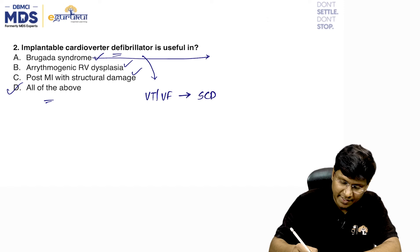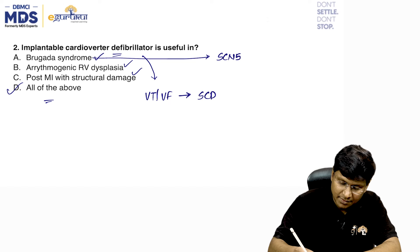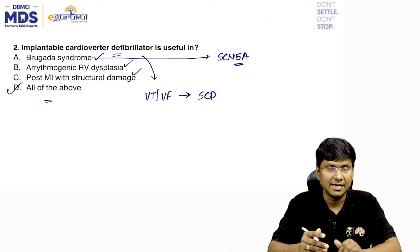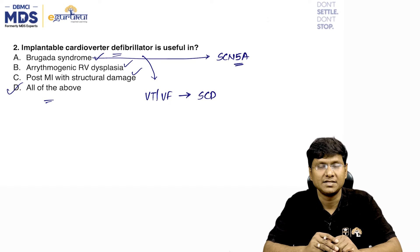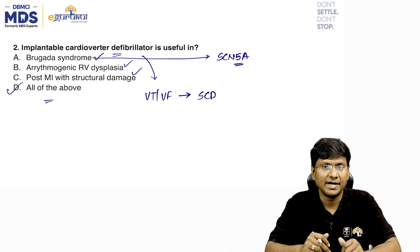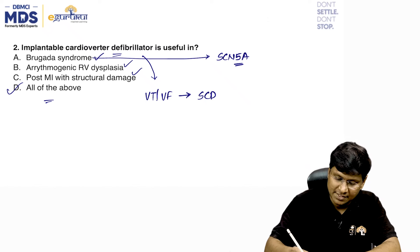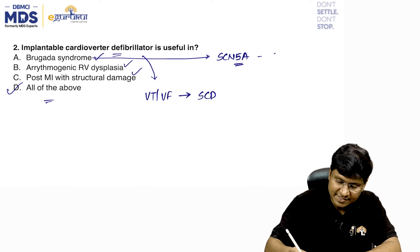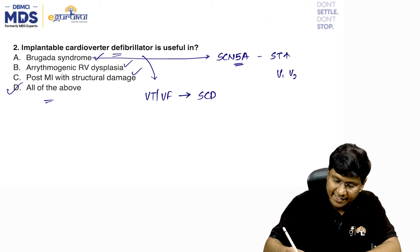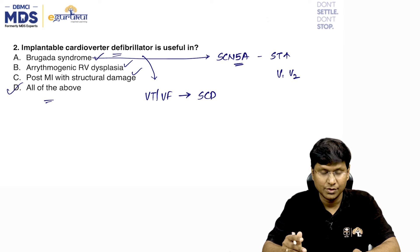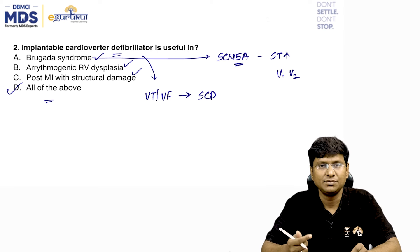Brugada syndrome is a sodium channelopathy with abnormality within the SCN5A channel. You identify Brugada syndrome on ECG by a coved ST segment elevation mainly in leads V1 and V2. In these patients, because of the sodium channelopathy, there can be arrhythmias causing sudden cardiac death.